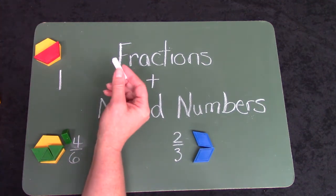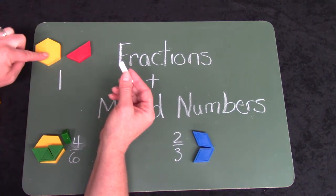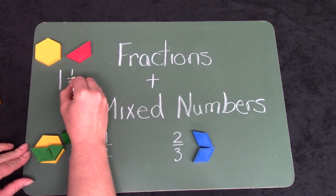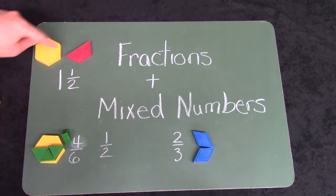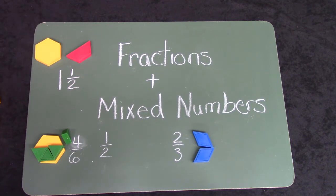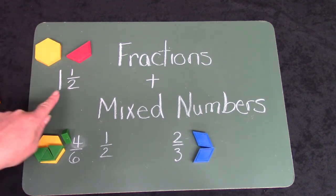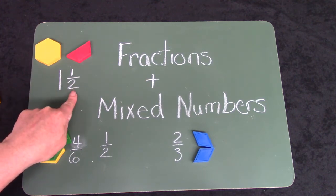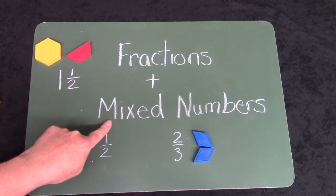What if we didn't have two? What if we just had one and a half hexagons? Here is one. And the trapezoid is half of a hexagon. One and a half. I have a whole number and a fraction. And we call that a mixed number.